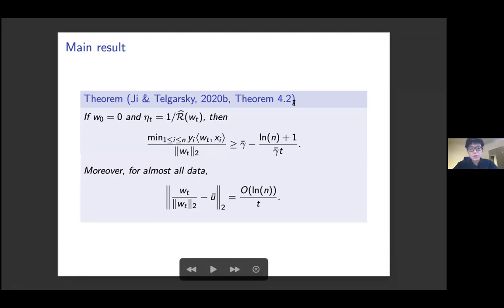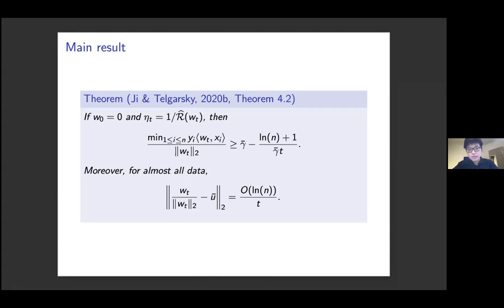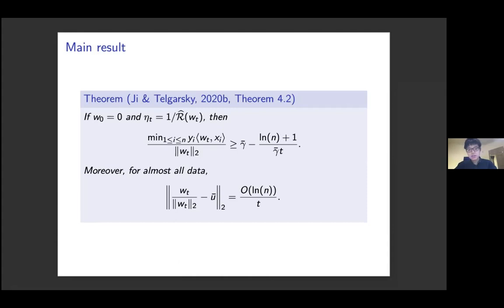Now we state our main result. Starting from zero initialization with an aggressive step size schedule — letting the step size η_t be the inverse training error — we can prove that the exact margin of the gradient descent iterate w_t is maximized to the L2 max margin γ̄ at a 1/t rate. Moreover, for almost all training data, the distance between the normalized gradient descent iterate and the L2 max margin solution also converges to zero at a 1/t rate.